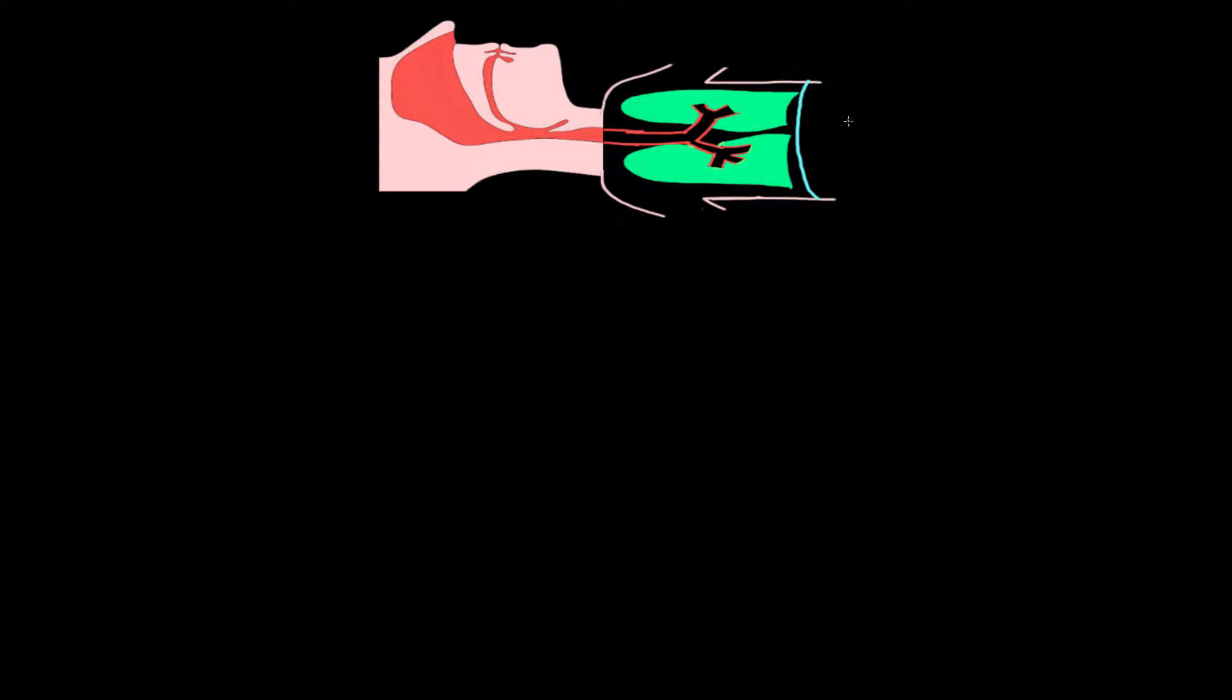By now we know a little bit about sleep disordered breathing and obstructive sleep apnea. Here I've drawn a person laying down, and you can see their airway extending down into their lungs, which I've drawn here in green. When this person wants to take a breath or breathe out, we know that the diaphragm contracts, pulling out to either side, and in doing so, pulls air down into the lungs.